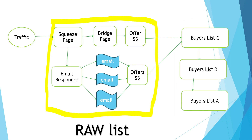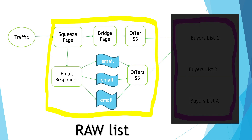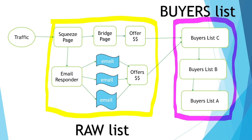The buyers list actually makes about 90% of your money. In simple terms, you have the raw list which collects all the emails. They are presented with low-ticket offers, and when they buy, they move into the buyers list. From the buyers list, that's when they are sent the higher-priced offers. The reason why you have a buyers list is because when they buy from you, they tend to know you, like you, and trust you — and that's why 90% of your money comes from the buyers list.